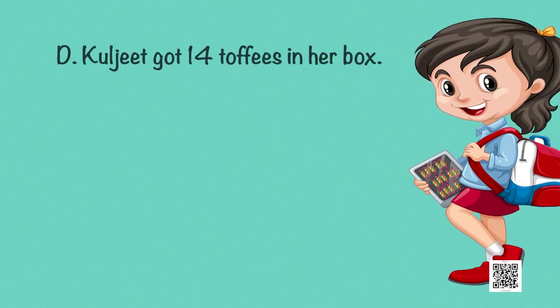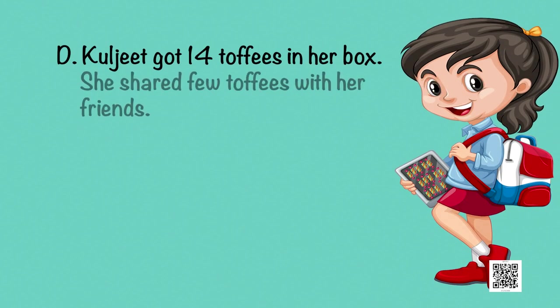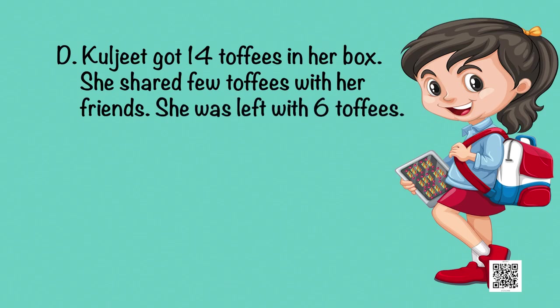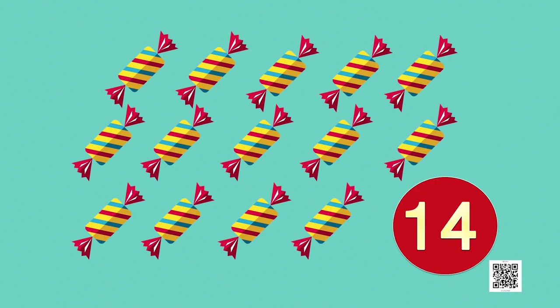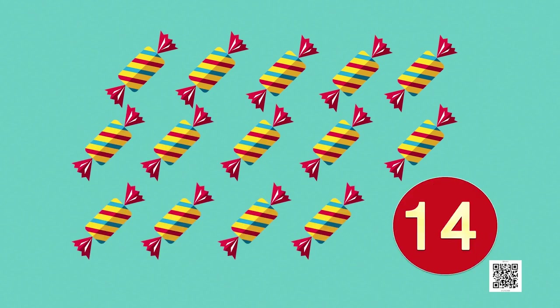Let us discuss part D also. Kuljit got 14 toffees in her box. She shared few toffees with her friends — do you also share your things with your friends? She was left with 6 toffees. How many toffees did she share with her friends? We had 14 toffees, and after sharing we are left with 6 toffees only. We need to count the toffees that were shared, so we remove 6 from 14.